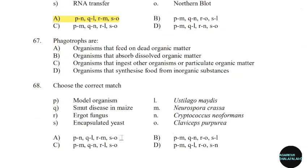67th question: Phagotrophs are. Correct answer: Option C — Organisms that ingest other organisms or particulate organic matter.